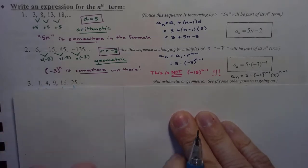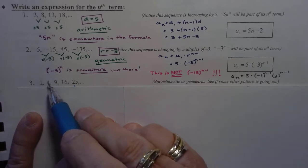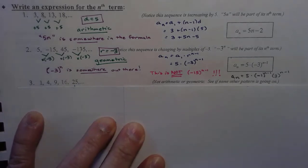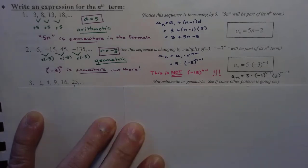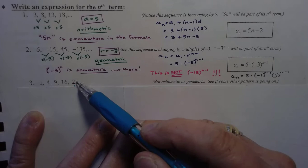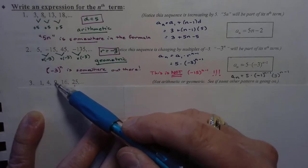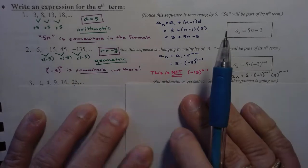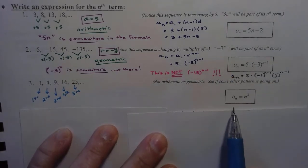Let's look at this next one. Can I find a relationship between these numbers and the position each of them is in the sequence? The fifth term looks like 5 squared. The fourth term is 4 squared. The third term is 3 squared. So I can conclude that my equation for my sequence is n squared.